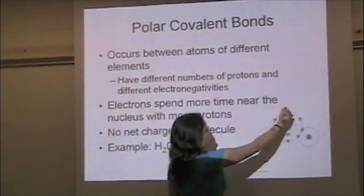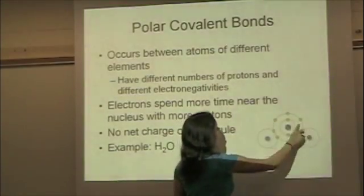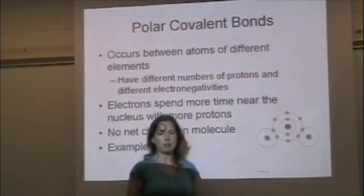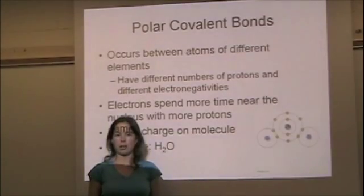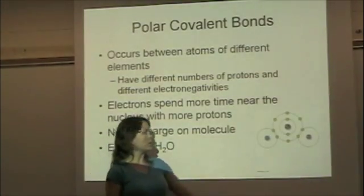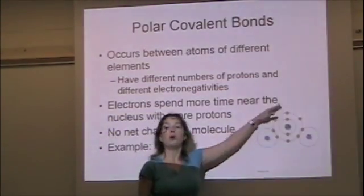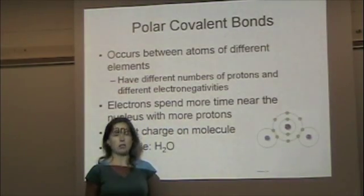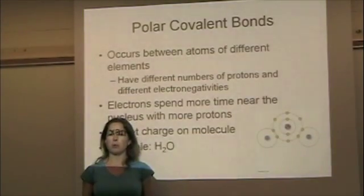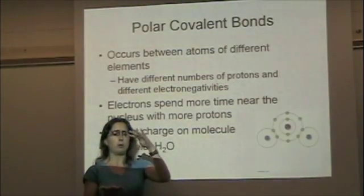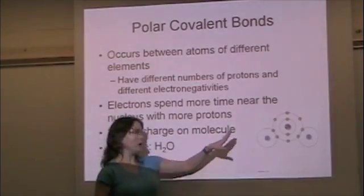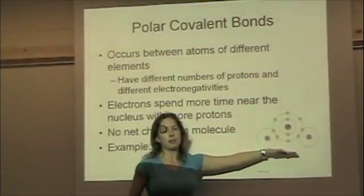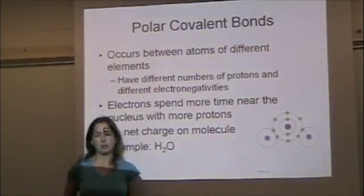Since the electrons are up at this end more frequently, the oxygen end has a slightly negative charge, and then the hydrogen end has a slightly positive charge because the electrons aren't hanging out there as frequently. So we can say that the molecule has two poles, or two different ends with different slight charges. You can compare that to the poles of the earth, the north and the south pole being the two ends of the earth. So we have a negative pole and a positive pole on this molecule.